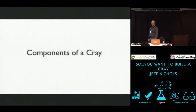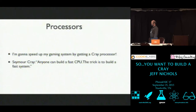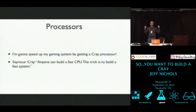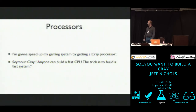Some of you already said you're going to speed up your gaming system and get a Cray processor. Seymour Cray was the designer — that's where the name came from, he was the founder of the company. A quote from him: 'Anyone can build a fast CPU, but the trick is to build a fast system.' He worked with Control Data Corporation before starting Cray, and there he was designing the fastest systems in the world.